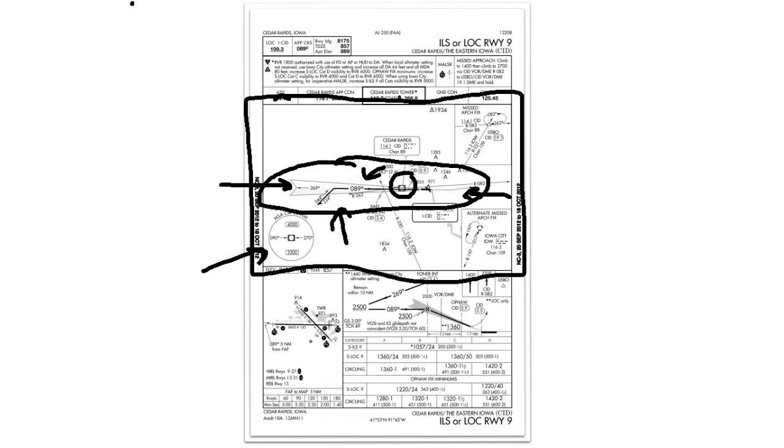The next section is the plan view section of the approach chart. The plan view includes an overhead top-down look at the approach. Here we can see the approach course, any information on procedure turns that we may need to fly, the location of any relevant navigational aids, the missed approach course, minimum safe altitudes, and some obstacle data. The plan view gives you a general view of where you should be along the approach course.